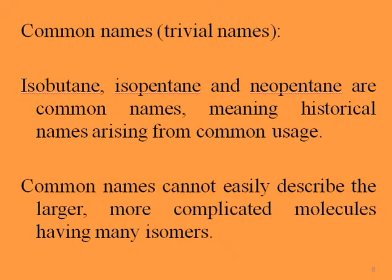As a review: common names are sometimes called trivial names. Isobutane, isopentane, and neopentane are common names, meaning historical names arising from common usage. Common names cannot easily describe larger, more complicated molecules having many isomers, which is why we need another system for naming organic compounds: IUPAC naming.